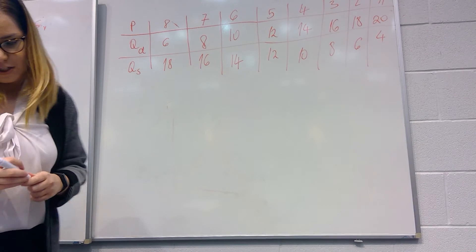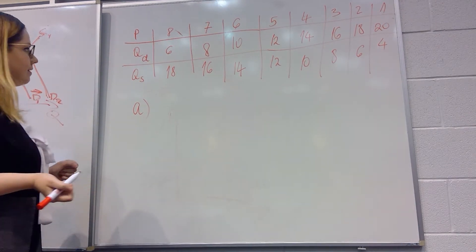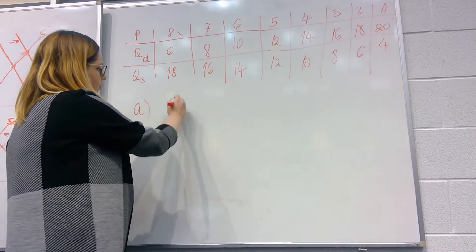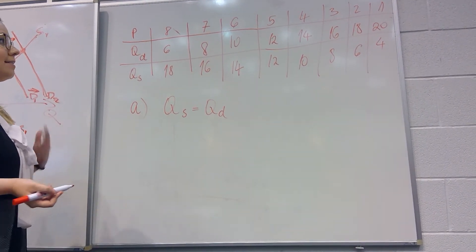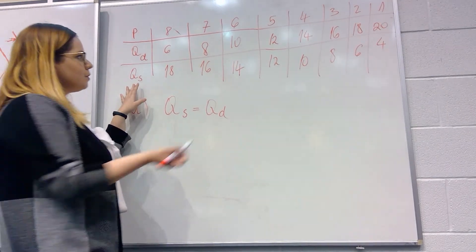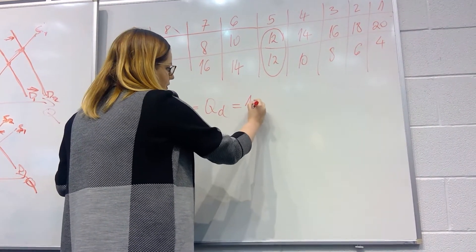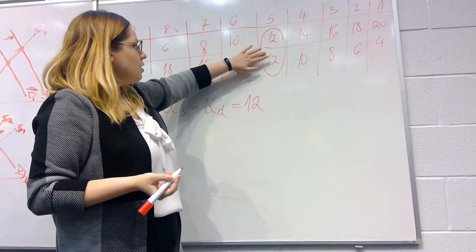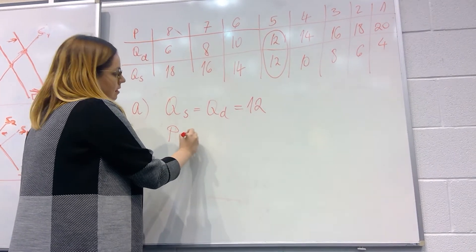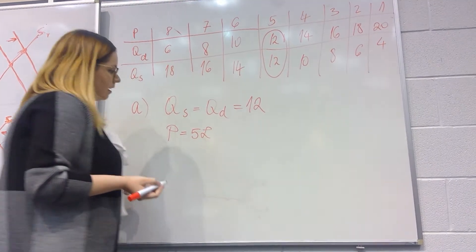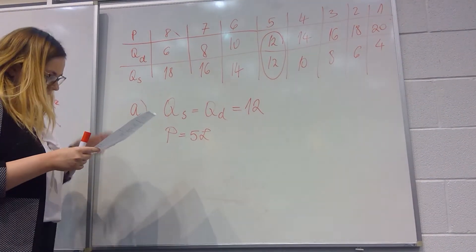Question 3a asks: what is the equilibrium price and quantity? From your lectures you've learned that equilibrium is achieved when quantity supplied equals quantity demanded. Looking at the table, quantity supplied equals quantity demanded at 12 million units. The price at which both are 12 million is £5. So the equilibrium price is £5 and equilibrium quantity is 12 million.